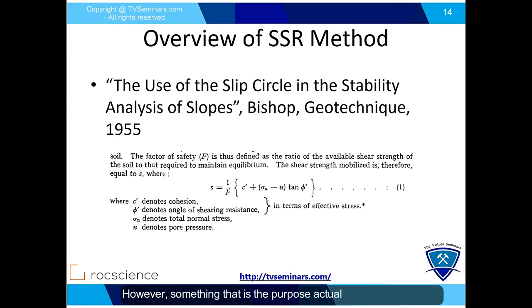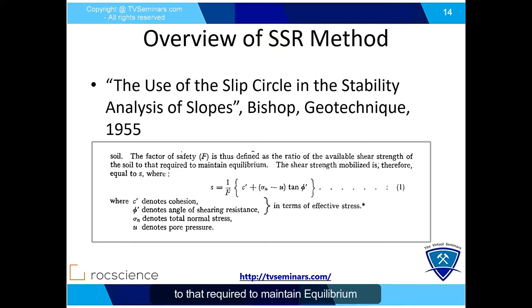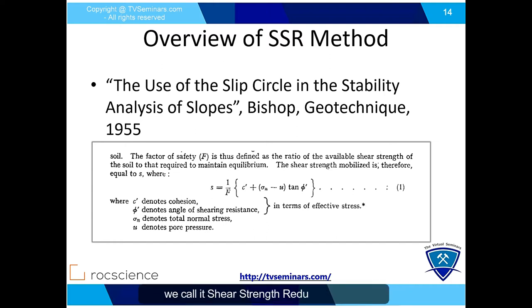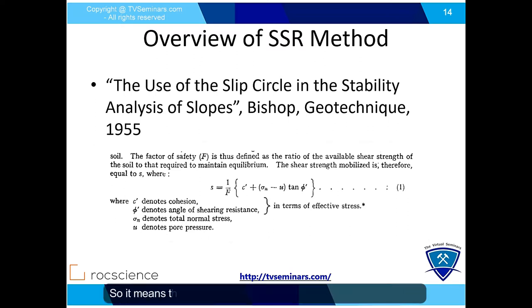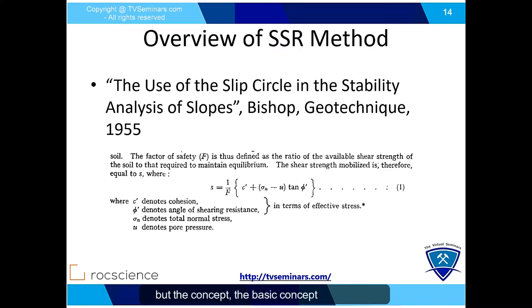The purpose of this presentation centers on a concept from Bishop: the factor of safety is defined as the ratio of the available shear strength of the soil to that required to maintain equilibrium. The shear strength parameter S is the original shear strength divided by a factor — the shear strength reduction factor. This means the concept of the shear strength reduction method to calculate factor of safety in slope stability analysis using finite element is the same as in limit equilibrium. The difference is you divide the slip surface into mesh elements and perform stress-strain analysis, while limit equilibrium uses a different approach, but the basic concept is the same.